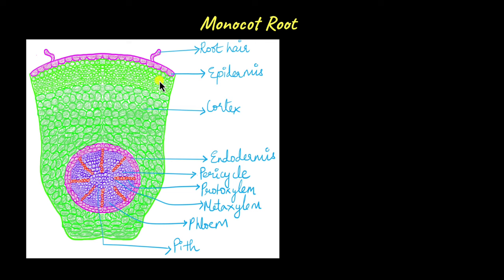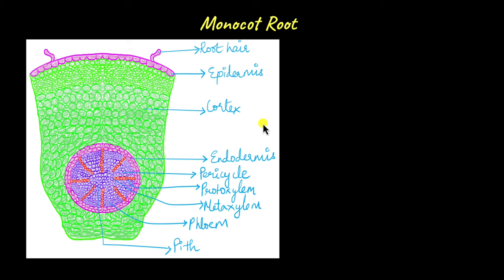Monocot root is very similar to dicot root. Looking at a transverse section of a monocot root, it also has a single layer of epidermis from which root hairs are projected. It has several layers of cortex cells which have intercellular spaces. The innermost layer is called the endodermis and below that is the pericycle.